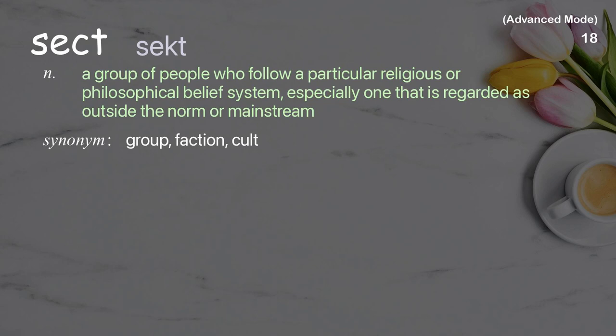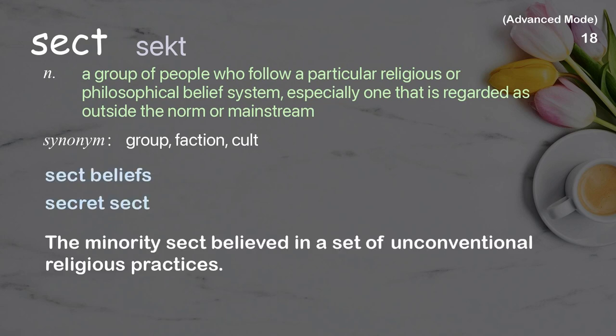Sect. A group of people who follow a particular religious or philosophical belief system, especially one that is regarded as outside the norm or mainstream. Examples: Sect beliefs. Secret sect. The minority sect believed in a set of unconventional religious practices.